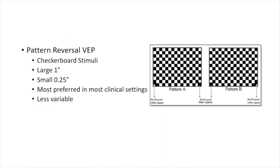Pattern reversal VEP is the most common and most preferred in clinical settings. It is very less variable, meaning you can follow up a patient with very high reliability. It uses a checkerboard stimulus with large one-degree pattern checkerboards and also smaller 0.25-degree checkerboards. Whatever is white in one frame is black in the next — it is a reversal of the entire pattern, hence the name pattern reversal VEP.